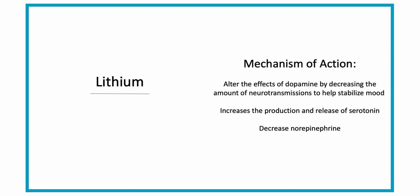During mania, there is usually a dopamine overactivity, so this helps to limit the number of excited neurotransmissions that are happening. It is also thought to increase the production and release of serotonin, which is also known as the happy neurotransmitter, and decrease the norepinephrine, which is a stress hormone from being released. So it is increasing the release of that happy hormone and decreasing the release of that stressed hormone.